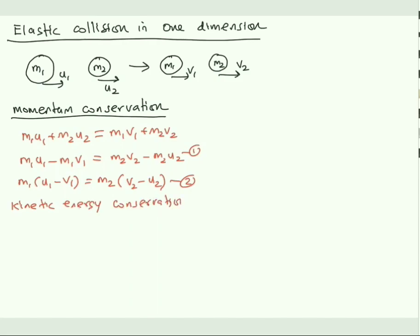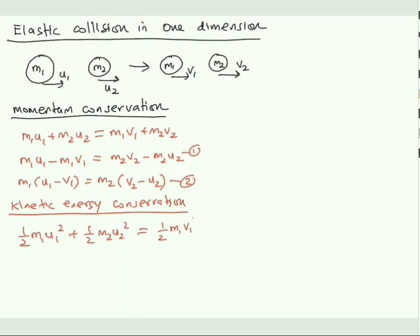Now we write the kinetic energy conservation equation. Before collision the total kinetic energy is ½m1·u1² + ½m2·u2², and after collision it is ½m1·v1² + ½m2·v2². The ½ is common and cancels, giving m1·u1² + m2·u2² = m1·v1² + m2·v2².